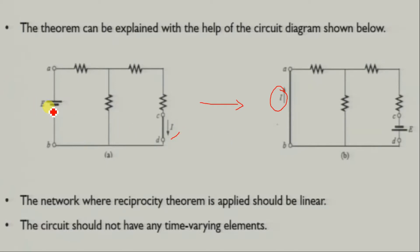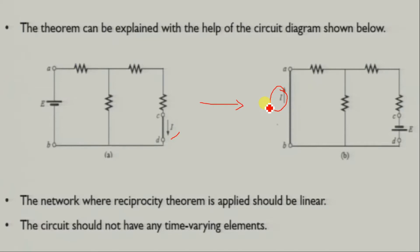If we replace E and I — if the other circuit is not changing — then E and I's positions change but E and I's values remain the same. We will prove this and solve it to see that the reciprocity theorem is applied.